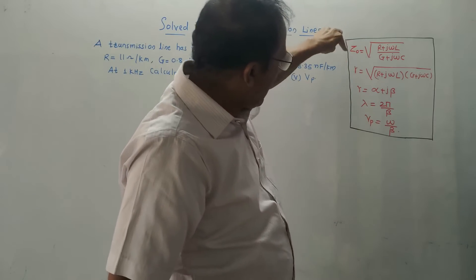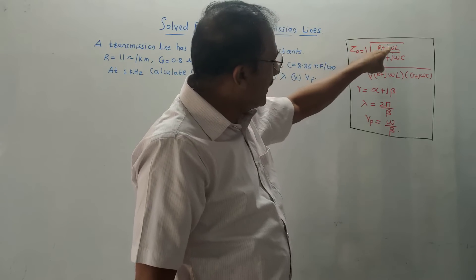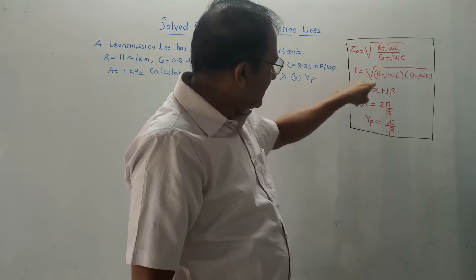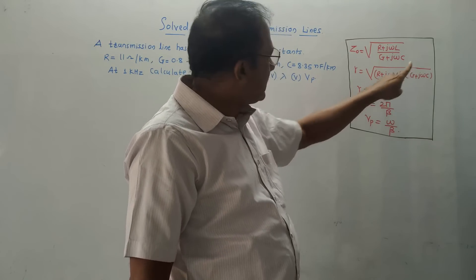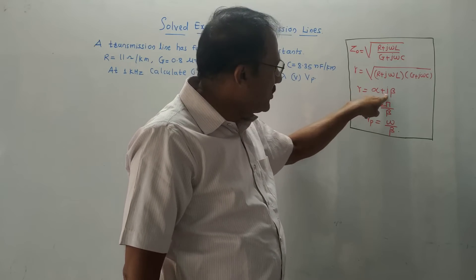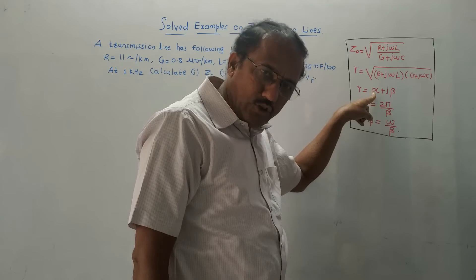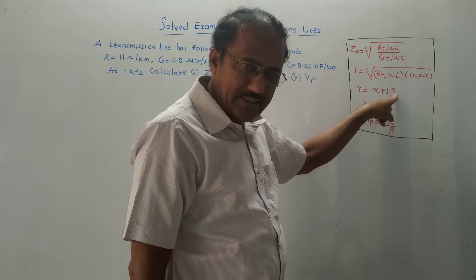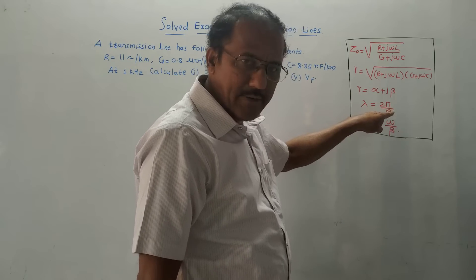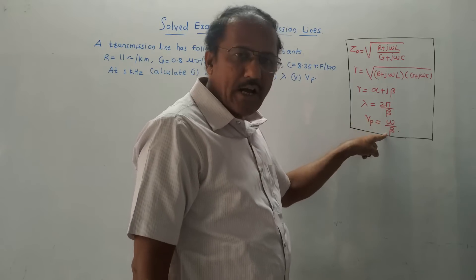We need these formulae. Z0 is the characteristic impedance, which is the square root of (R + jωL) / (G + jωC). Gamma is the square root of (R + jωL)(G + jωC). Gamma is also expressed as α + jβ, where alpha is the attenuation constant and beta is the phase shift. The wavelength lambda is 2π/β, and Vp, the velocity of propagation, is ω/β.